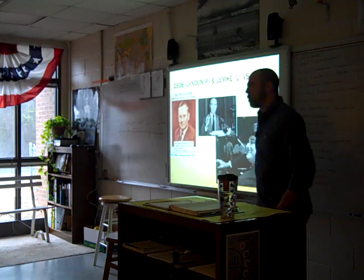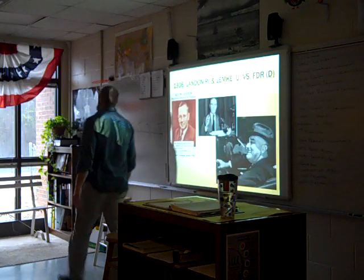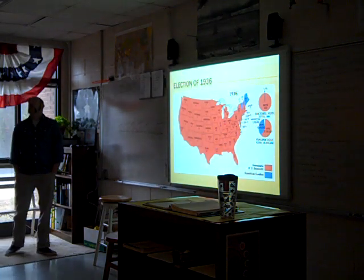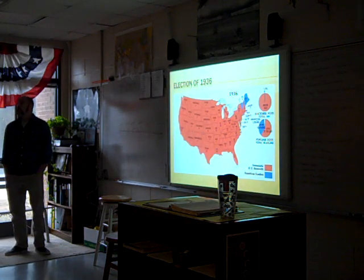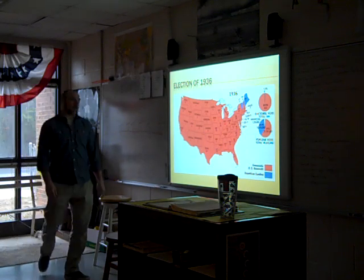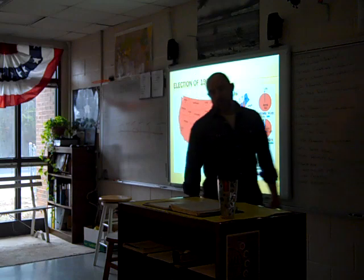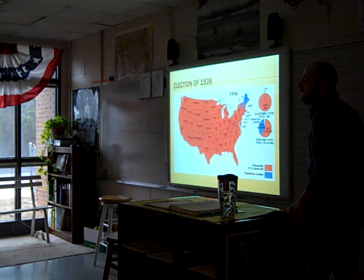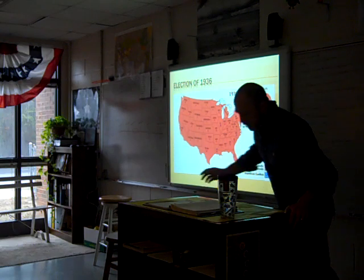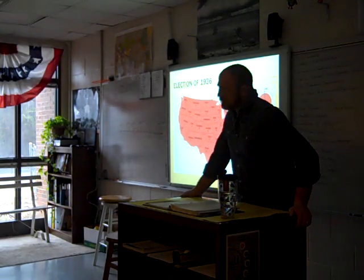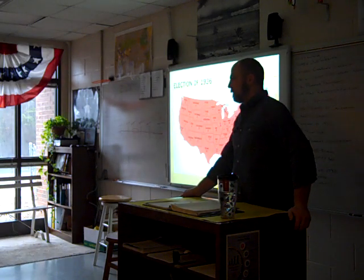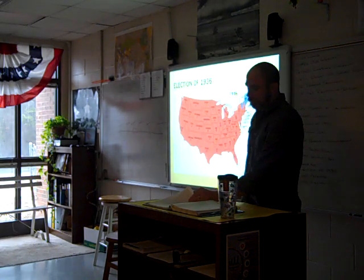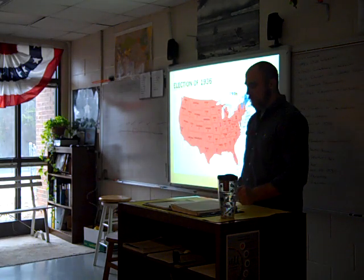This was the first time for polls. The Literary Digest reported they thought Landon was going to win in a landslide. We look at this map — false. FDR only lost Maine and Vermont. That's absurd. Democrats also picked up more seats in both Houses of Congress. They now own the Senate 76 to 16, and the House 331 to 89. The Republicans...